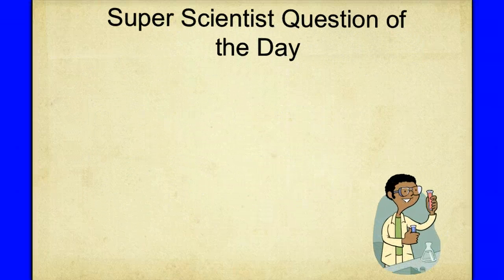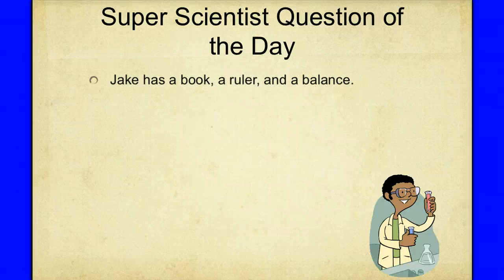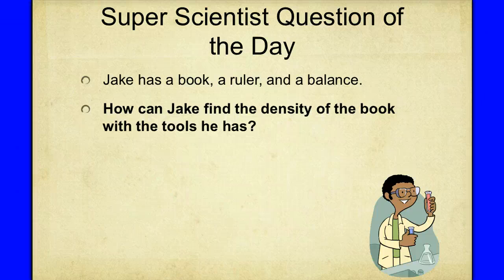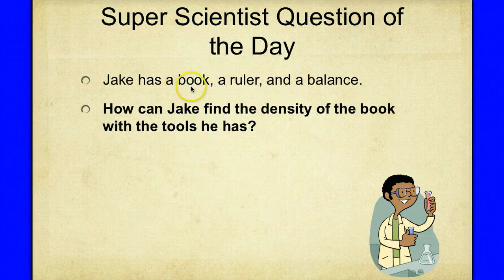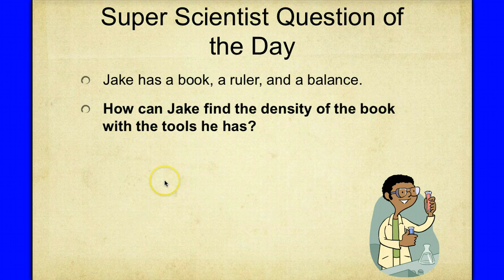Finally, bring this question to class: Jake has a ruler, a book, and a triple beam balance. How can Jake find the density of the book using only those tools? Write a short descriptive paragraph. Hint: density involves mass and volume — those are the two things Jake needs to find. Remember to bring all your practice problem answers and this response to class.